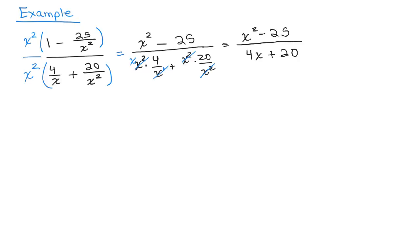So we have eliminated the complex fraction. Now we just have a single rational expression here, a single fraction. So we have to see if we can reduce that further by factoring numerator and denominator. The numerator is the difference of two squares: x plus 5 times x minus 5.